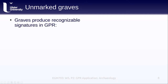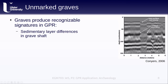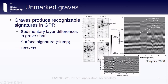Like other buried objects, graves can produce recognizable signatures in a GPR survey. For example, when a grave is dug and reburied, it disturbs the natural sedimentary layers. We can see this in a change in the reflection signal, including a vertical truncation of horizontal reflectors in the radargram, as well as a near-surface slump caused by the settling of soil over time. Where there are caskets, these also show up in the radargram. The profile here shows wooden coffins that appear as reflectors, but also a metal coffin.